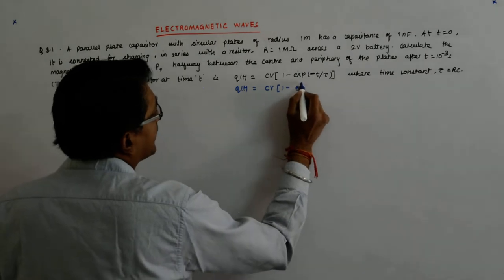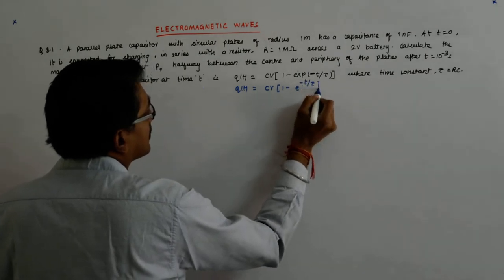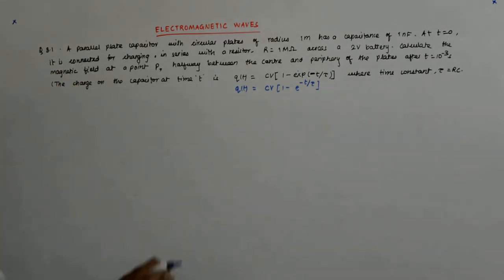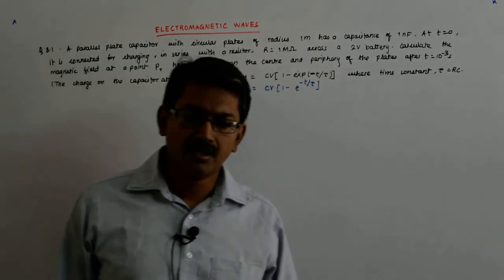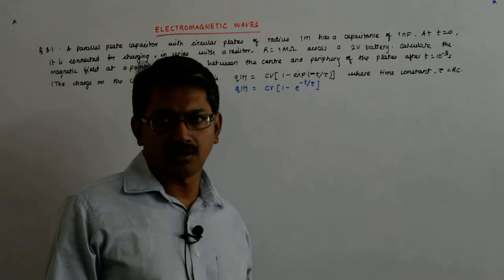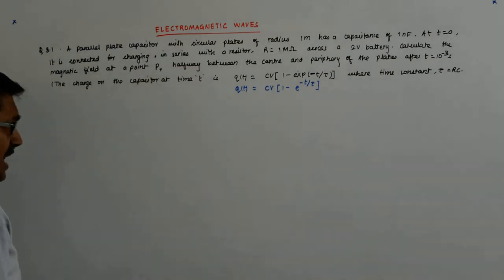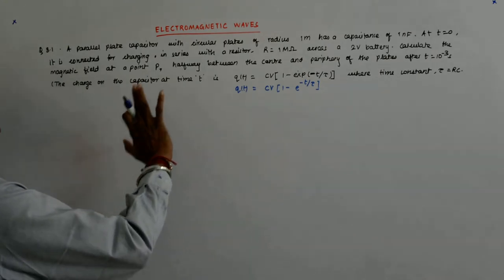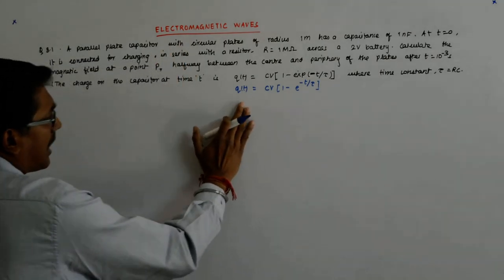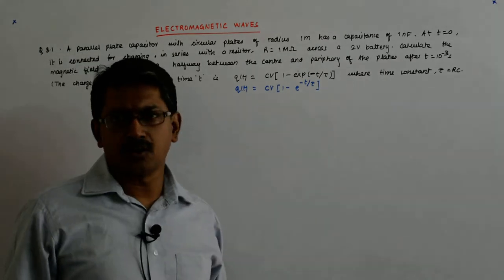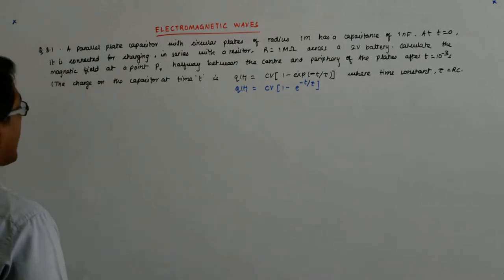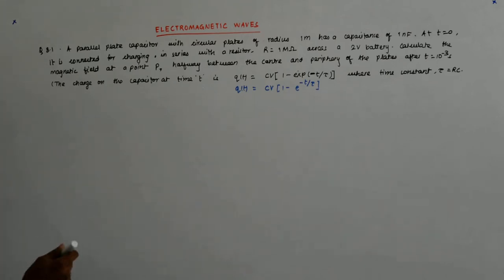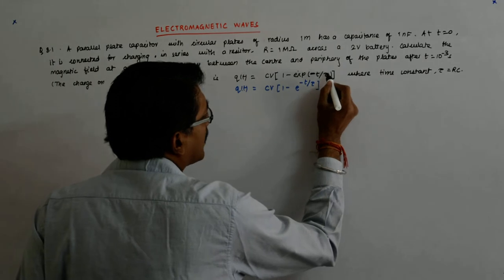This is a subject matter of DC circuits that we have not studied till now. So you just understand that's why they have given it to you - this is how the charge varies and it can be shown that this is how the charge varies on a DC circuit.